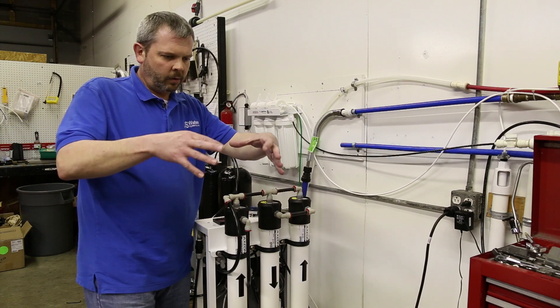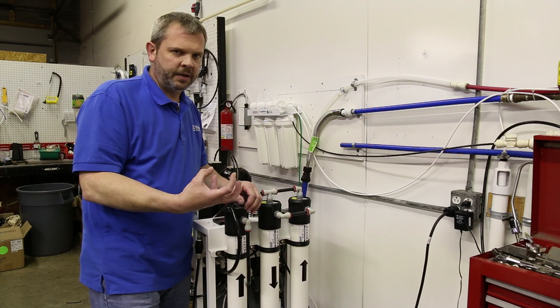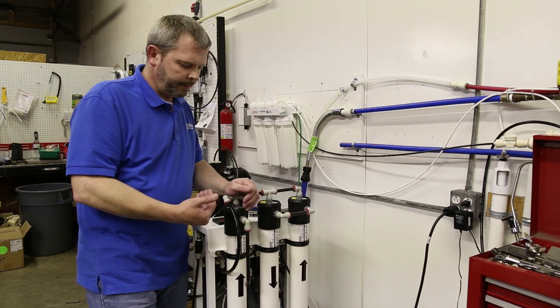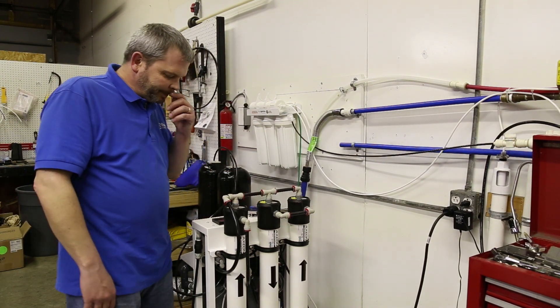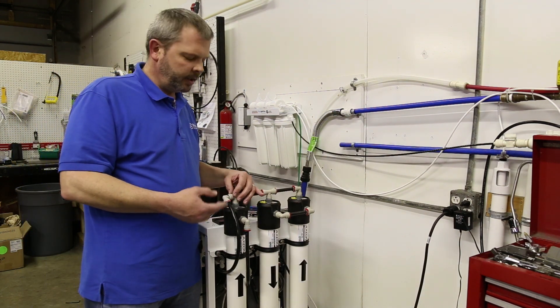There's something called a skirt seal that literally looks like a woman's skirt that comes off the side of the membrane. That particular seal is what seals off the bad water and forces that bad water in through the membrane. We're going to take a membrane out and I can show that to you.